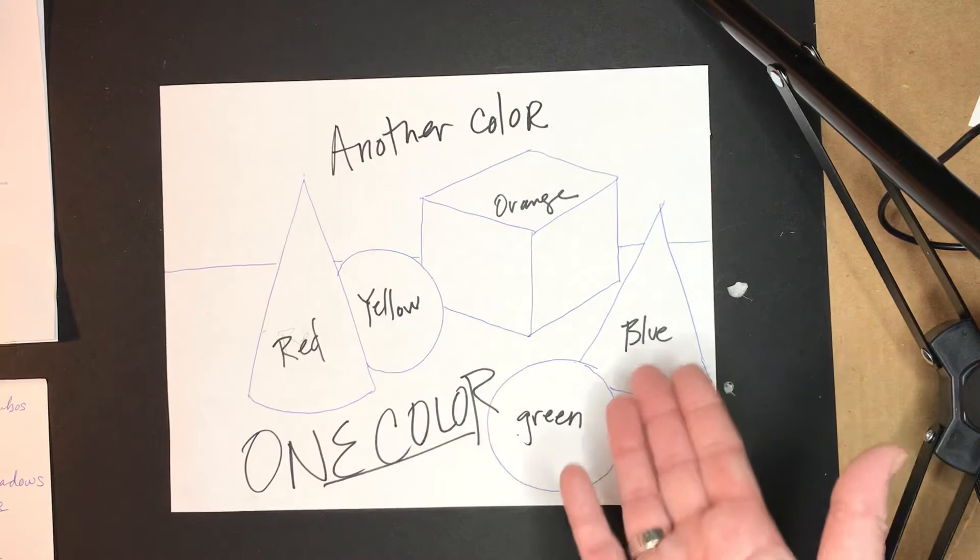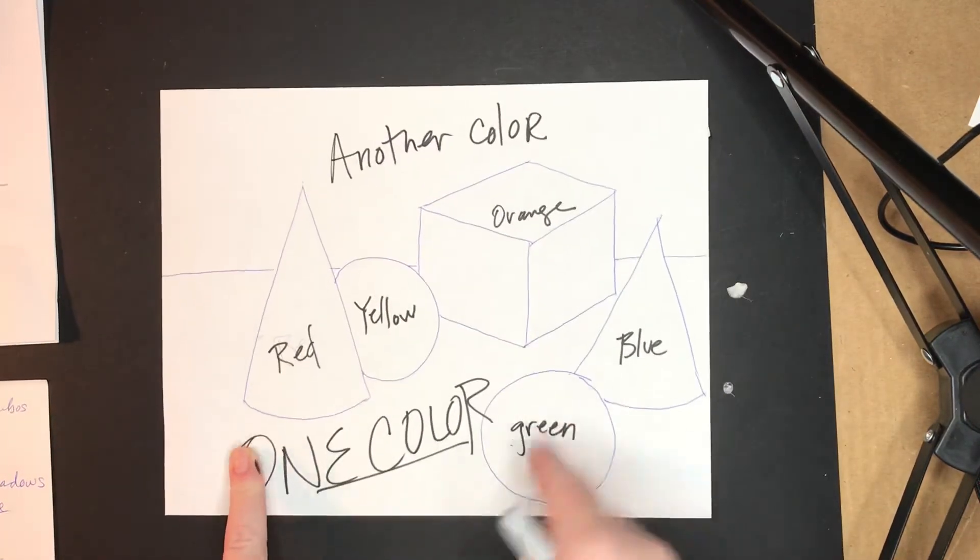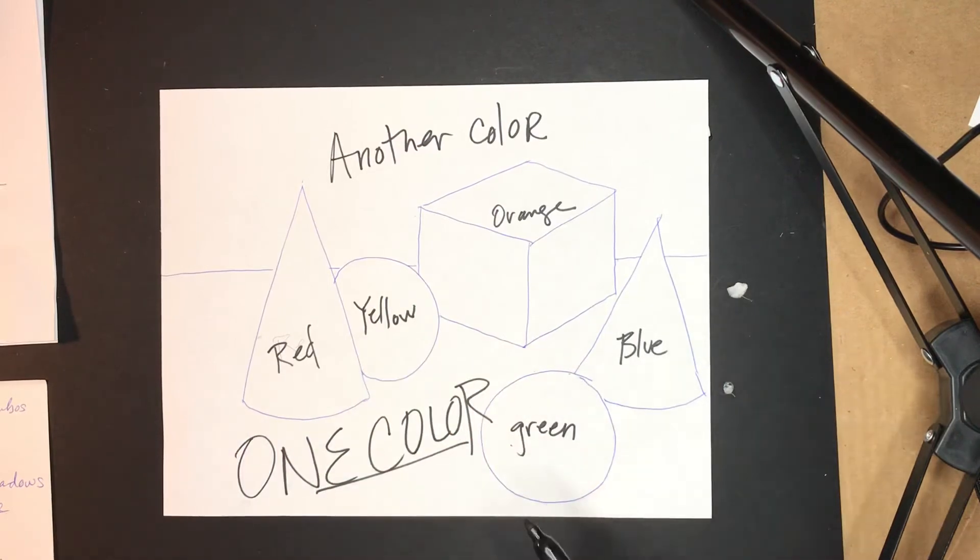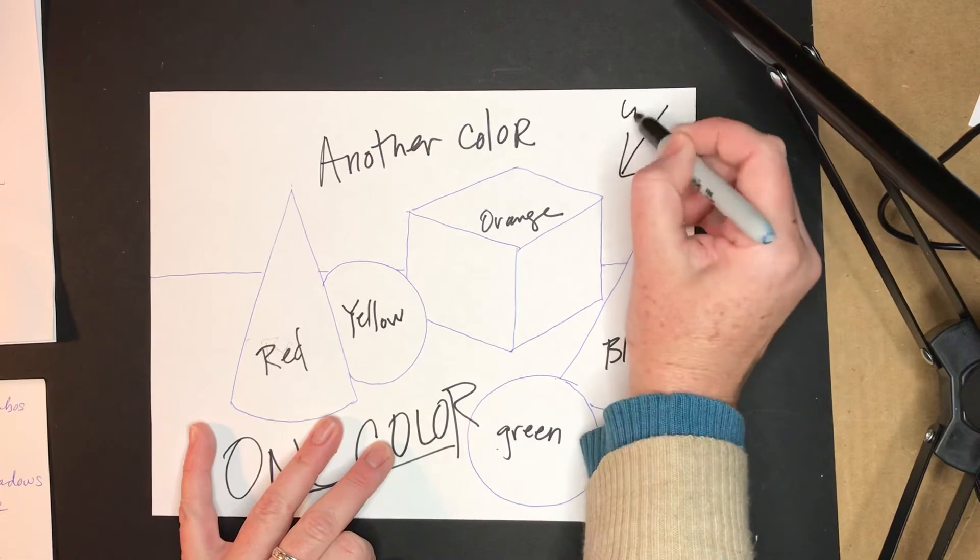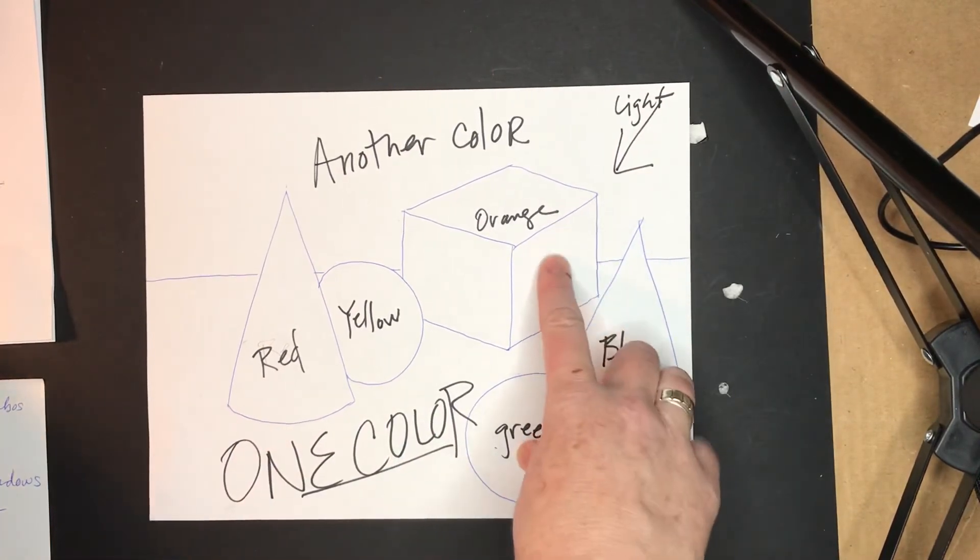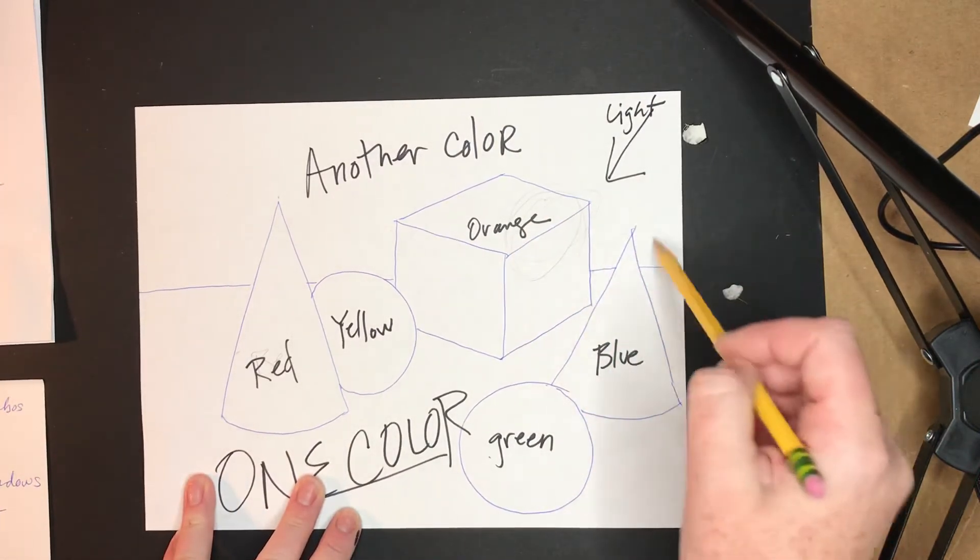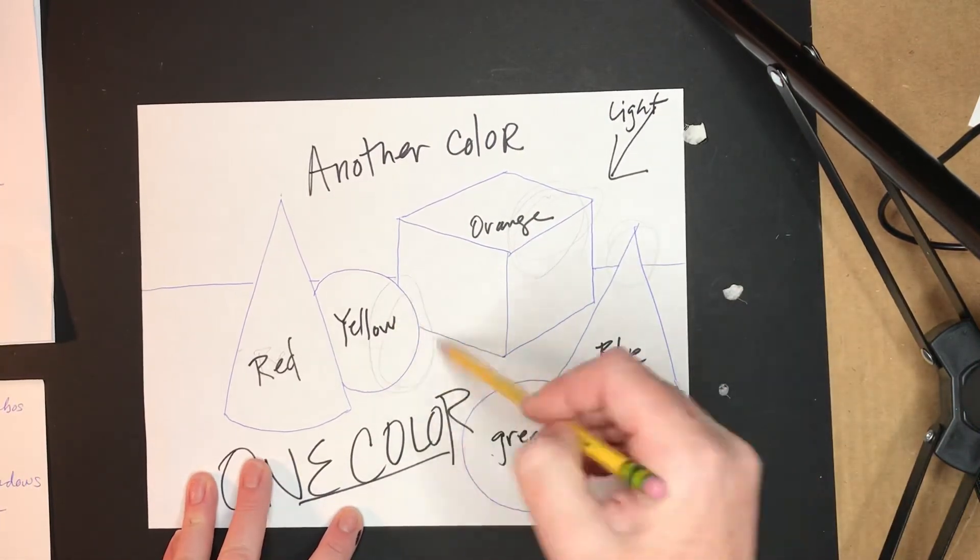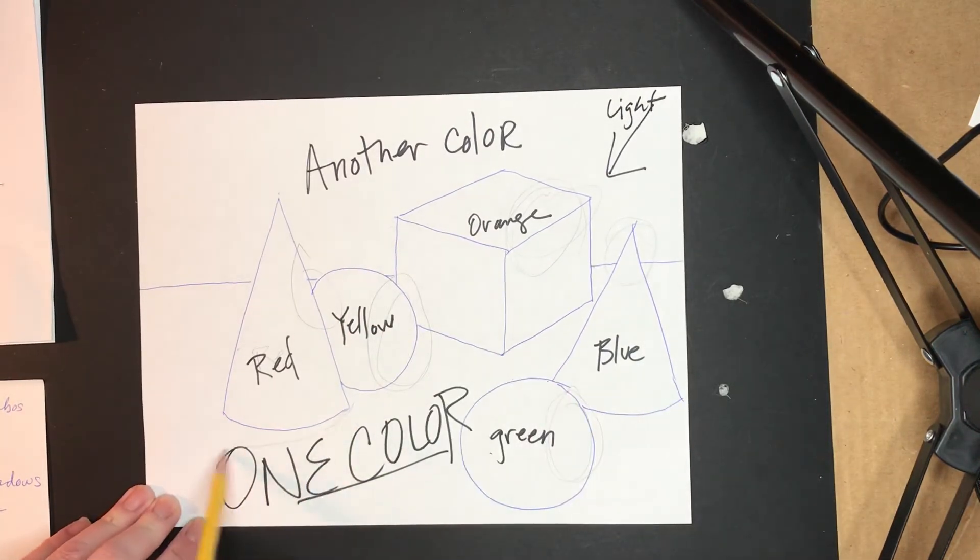When you go to shade, first thing you want to do is where is your light source coming from? Is your light source from the left? Is it from the right? That's gonna make a difference on which way your shadows and all that kind of stuff are going. I'm gonna say my light is coming from here, so that means that all of my highlights are right on this side of the objects.